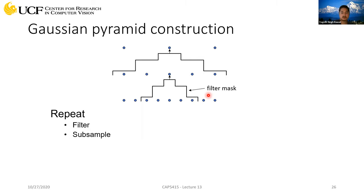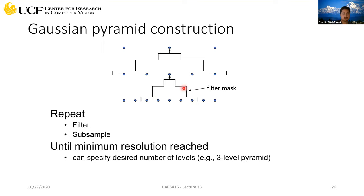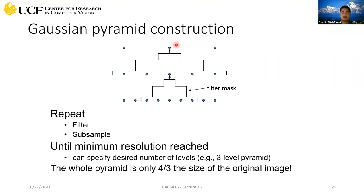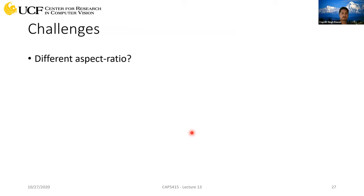You repeat until you reach a predefined level, or down to just one or two pixels. The total memory required to store all the subsampled images is only four-thirds of the original image, so in terms of memory it's not taking a lot. That was the issue of different scales, which we can easily resolve using multiple scales and image pyramids.